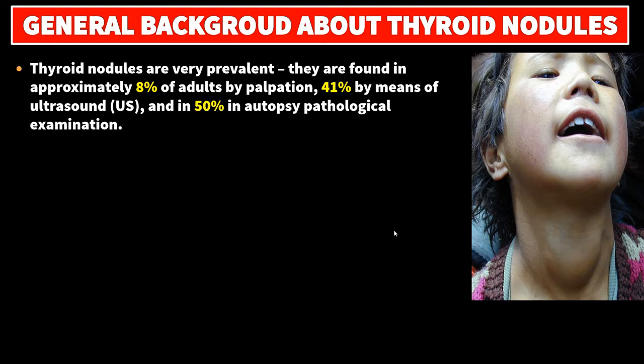General background about thyroid nodules. Thyroid nodules are very prevalent. They are found in approximately 8% of adults by palpation, 41% by means of ultrasound, and 50% in autopsy pathological examination.